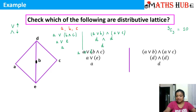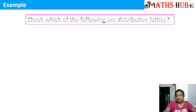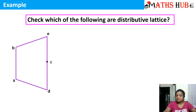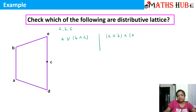But in this case since E is not equal to D we conclude it is a non-distributive lattice. Let's check the next example. You are given this lattice and we need to check whether it is distributive or not. Let's take the pair of elements A, B, C. According to the distributive law, A join (B meet C) should be equal to (A join B) meet (A join C).